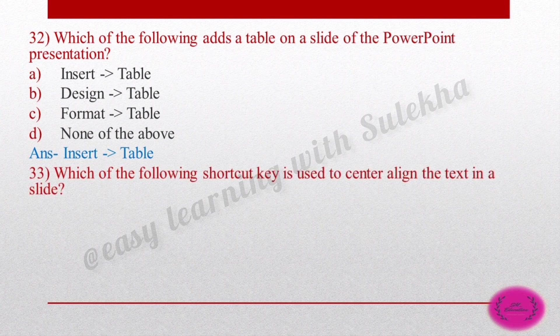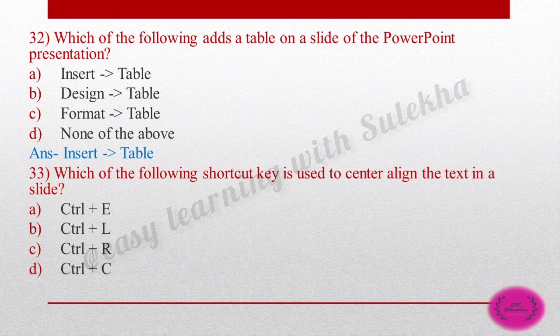Question 33: Which of the following shortcut keys is used for center alignment to align text in a slide? Options are: Ctrl+E, Ctrl+L, Ctrl+R. The right answer is Ctrl+E — it is the shortcut key for center alignment.